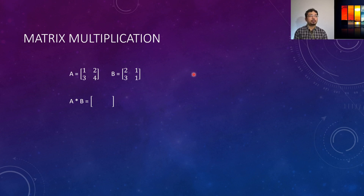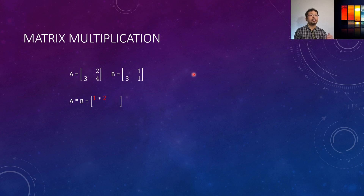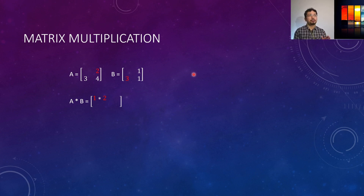I'll go over the method one by one. The first element of the result is: the first element of A (1) times the first element of the first column of B (2), plus the second element of A's first row (2) times the second element of B's first column (3). So 1×2 + 2×3 gives us the first element of the multiplication matrix.